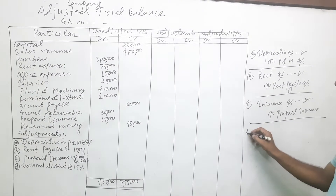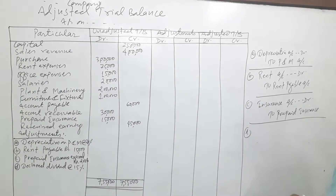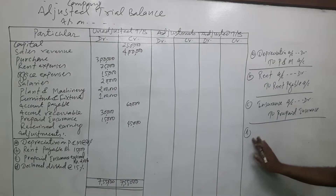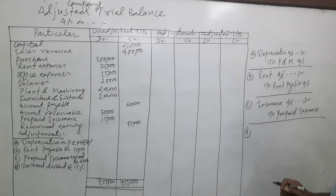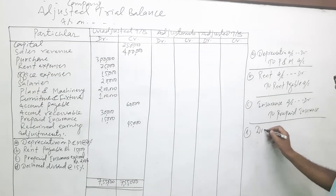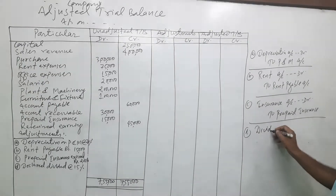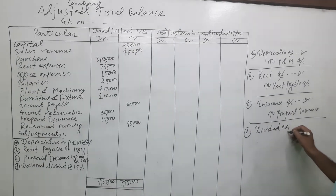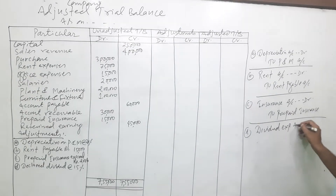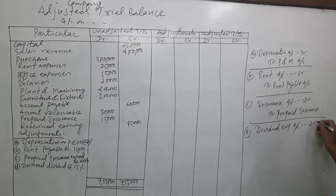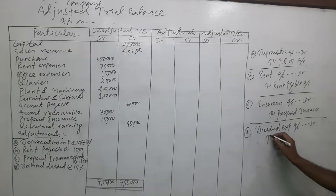For the declared dividend at the rate of 15%, the entry is: dividend expenses account debit to provision for dividend.